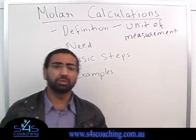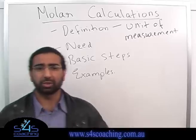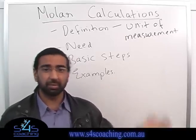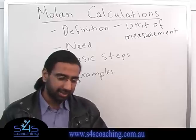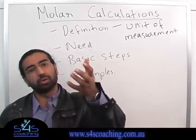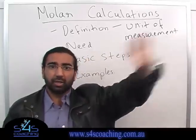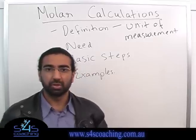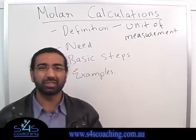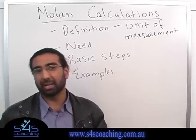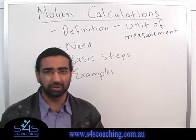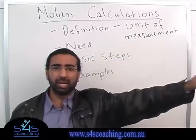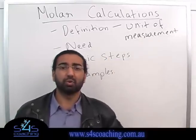Think of moles like this: suppose I want to go from here to Mexico. Australian dollars are not accepted in Mexico, so I take my Aussie dollars and convert them to American dollars, then convert my American dollars to Mexican pesos. Similarly, moles is an international currency. For all our calculations, I can take mass, volume, or concentration and convert that to moles, then use the mole ratio to go to the other side, and then convert the moles back into whatever I need.